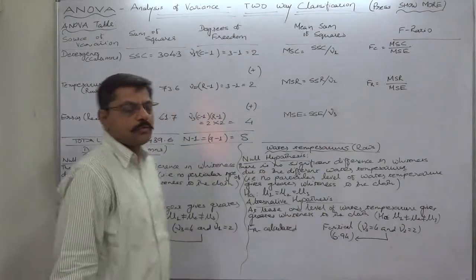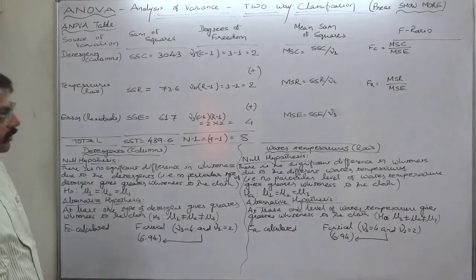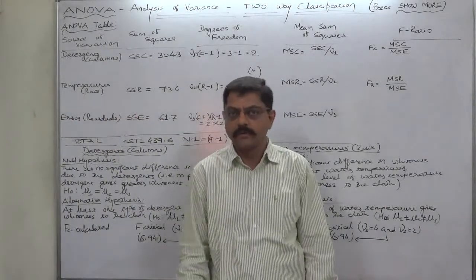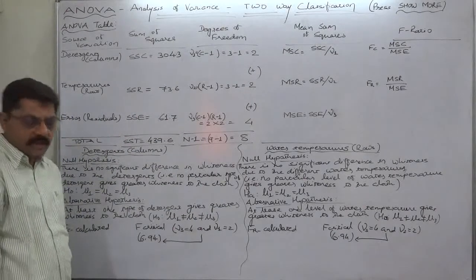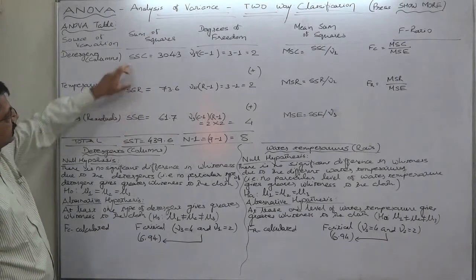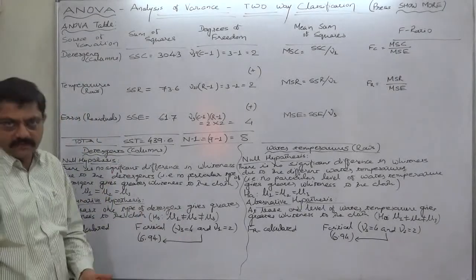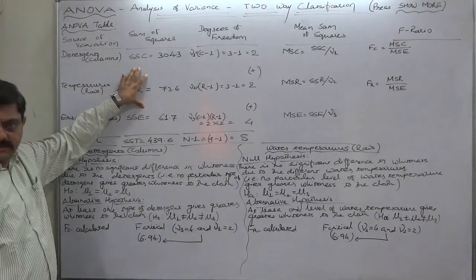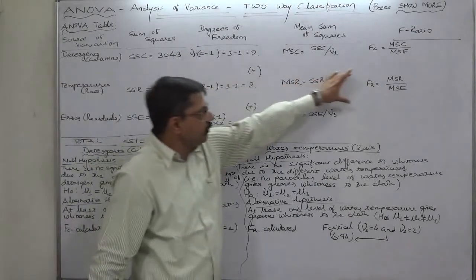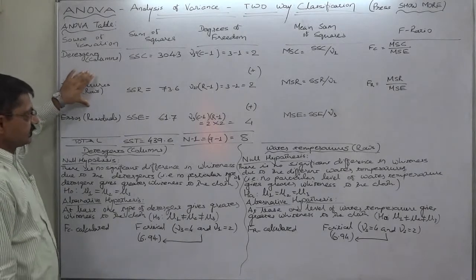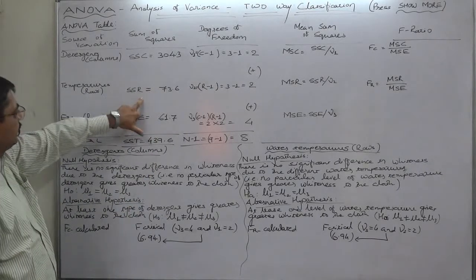Hello, namaskar and welcome. In the previous lecture we discussed part one of the dissolution of the problem in which we are trying to study the effect of three different water temperatures and three types of detergents on whiteness of a particular kind of cloth known as khabi. We already calculated SST, SSC, SSR in the previous lecture. The ANOVA table is more or less the same as in case of one-way classification, but we have introduced a new row based on the rows in the data. SSC is relevant to columns, SSR is relevant to rows.